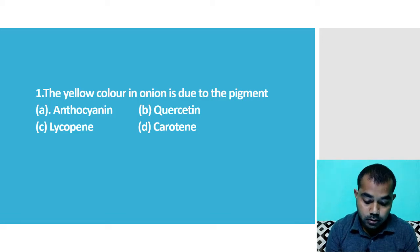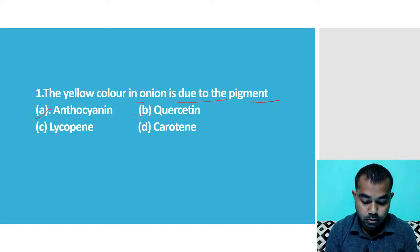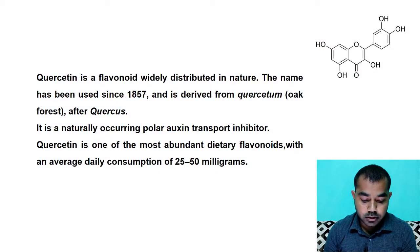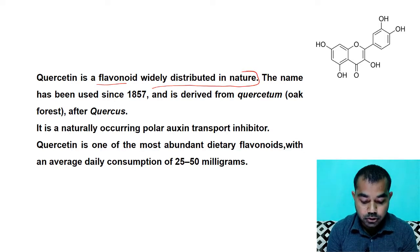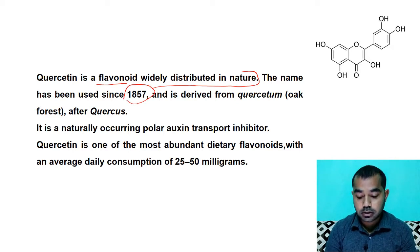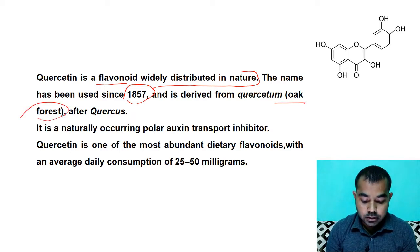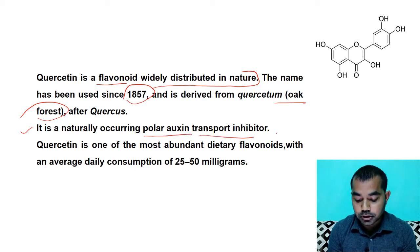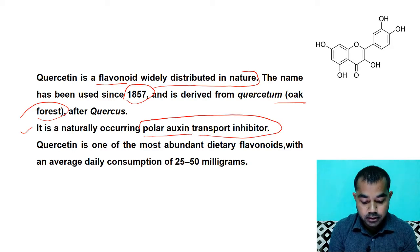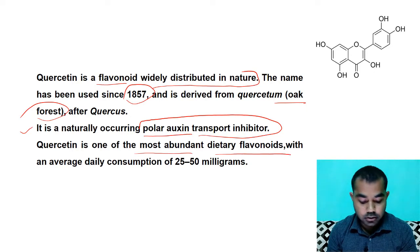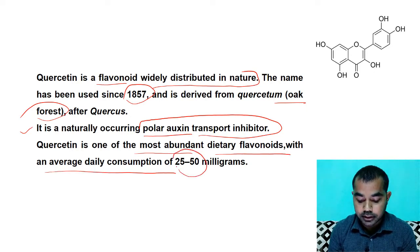The first question asks: yellow color in onion is due to which pigment? The options given are anthocyanin, quercetin, lycopene, and carotin. The right answer is quercetin. Quercetin is actually a flavonoid, widely distributed in nature. The name has been used since 1857 and is derived from 'quercetum.' It is a naturally occurring polar oxygen transport inhibitor, and one of the most abundant dietary flavonoids with an average daily consumption of 25 to 50 milligrams.